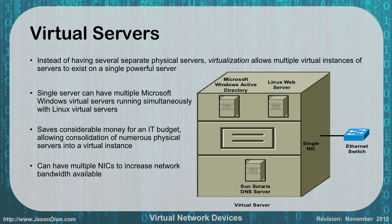We have a single NIC card, which may be a gigabit Ethernet. So if you have three servers all sharing one gigabit, that can cause problems. You might want to put two, three, or four NIC cards in teaming so you can have additional bandwidth.